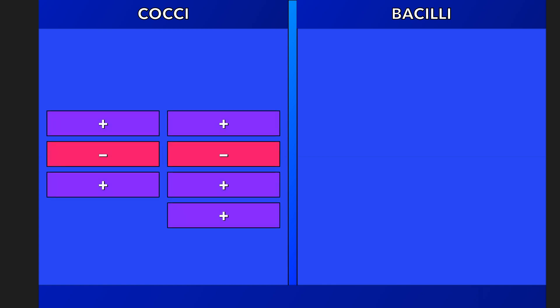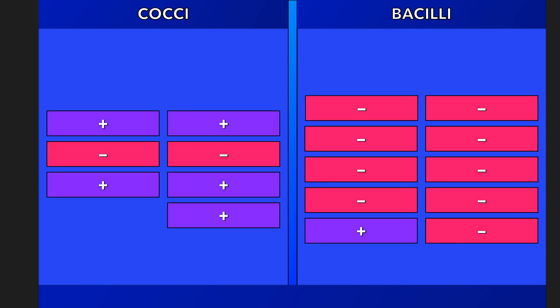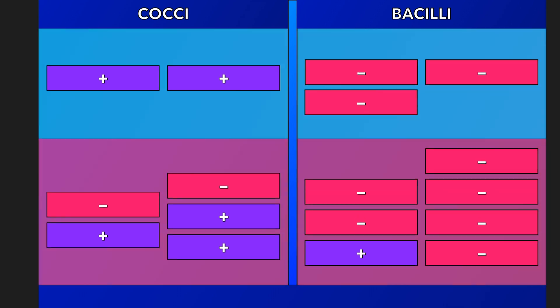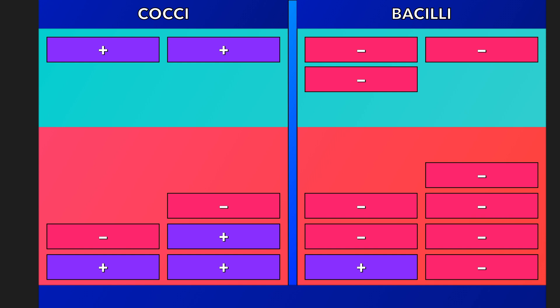For each generation, we will display several important organisms that may or may not be susceptible to that group of cephalosporins. Cocci will be found on the left, while bacilli will be on the right. Organisms in purple boxes are gram-positives, while the gram-negatives are in the pinkish boxes. If susceptible to a particular generation of cephalosporins, the organism will lie within the green area, while those that are not will be in the red area. We will look at the most widely accepted patterns of antimicrobial activity, and other types of organisms, such as spirochetes, will only be mentioned when relevant.